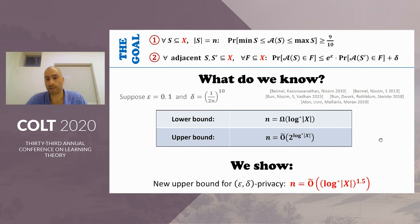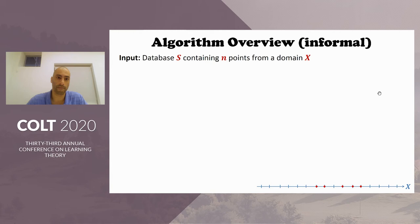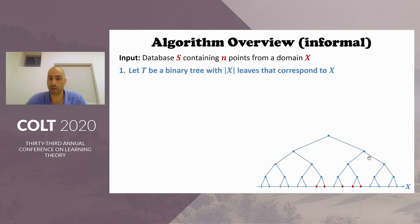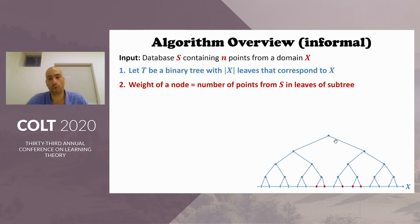Now I want to give a quick informal overview of our construction. Our algorithm receives as input a multiset S containing n points from the finite grid X — illustrated in blue, with input points in red. The first thing we do is construct a complete binary tree over the domain X, whose leaves correspond to elements of X. We then assign weights to every node in the tree: the weight of a node is the number of input points in the subtree rooted at that node. For example, the root has weight five; one child has weight two, the other has weight three.